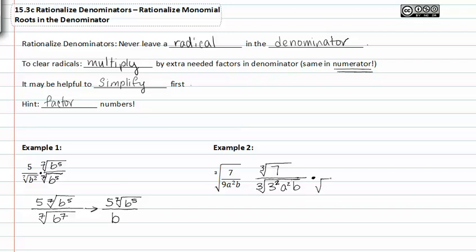I know that when I multiply it has to be a cube root. To go from three to the second to three to the third, I need three to the first, because when I multiply bases I add the exponents. Likewise, with a to the second, I need one more a to reach a to the third so it comes out of the radical. With b, I have b to the first, so I need two more b's to bring it up to b to the third. Whatever I multiply in the denominator must also be multiplied in the numerator — it's effectively multiplying by one, since the numerator and denominator are the same.